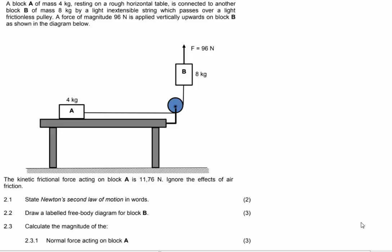This is a typical exam question that you can expect based on Newton's second law of motion. We see a block of mass four kilograms called block A resting on a rough horizontal table. Resting doesn't mean that it's not going to move or accelerate, it simply means that it's touching the surface of the table.